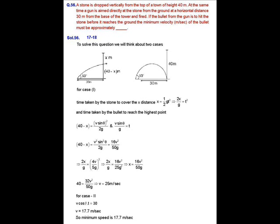In case one, suppose the bullet hits the stone at maximum height, that is at (40 − x) from the base and x from the top. The time taken by the stone to cover distance x: x = ½gt², so t² = 2x/g. The time for the bullet to reach the highest point: 40 − x = v² sin²θ / 2g = 16v²/50g. Since the times are equal, 2x/g = 16v²/25g², so x = 16v²/50g. Therefore 40 = 32v²/50g, which gives v = 25 m/s.